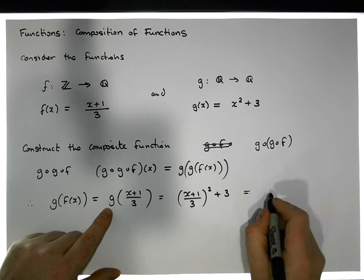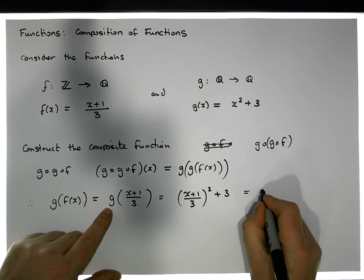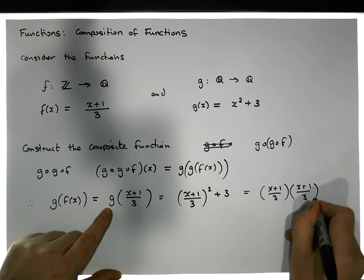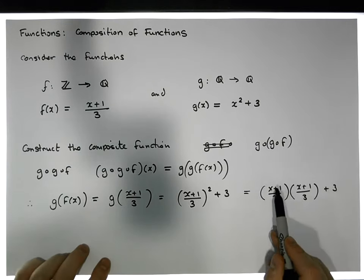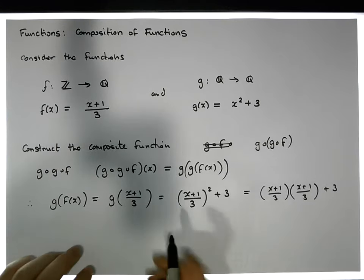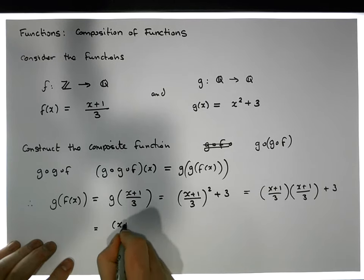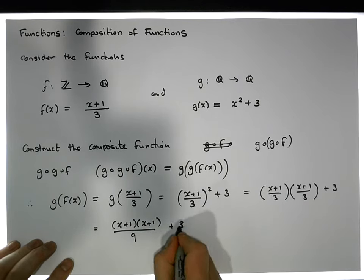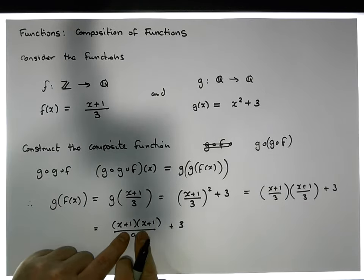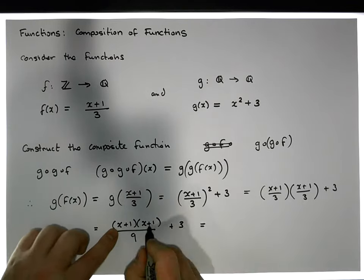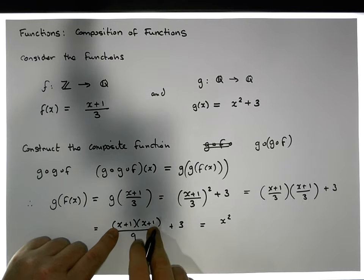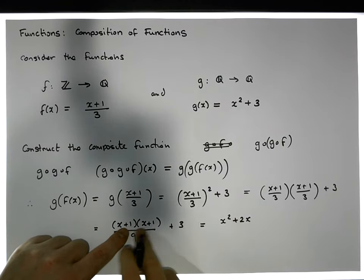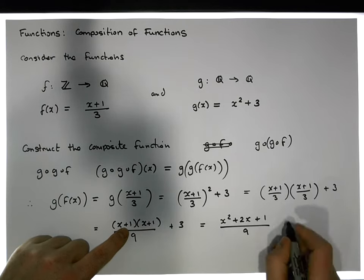When we expand this, it's the same as (x + 1)/3 × (x + 1)/3 plus 3. When multiplying fractions, we multiply top by top and bottom by bottom, giving us (x + 1)(x + 1) over 3 × 3 = 9, plus 3. Expanding: x² + x + x + 1 = x² + 2x + 1, all over 9, plus 3.